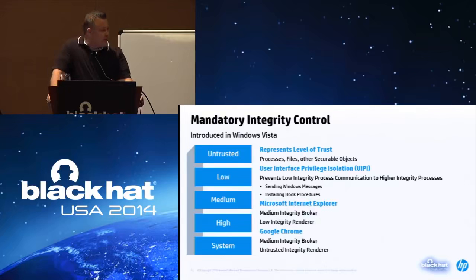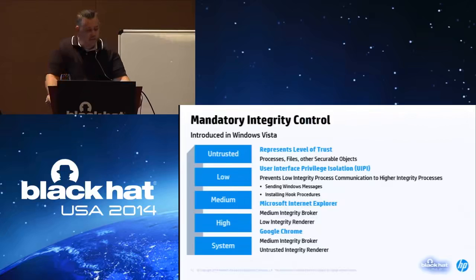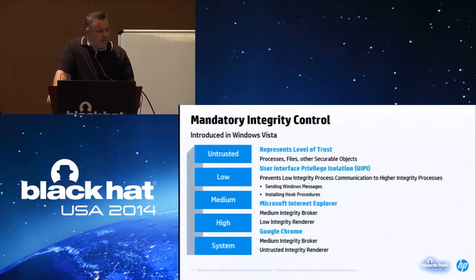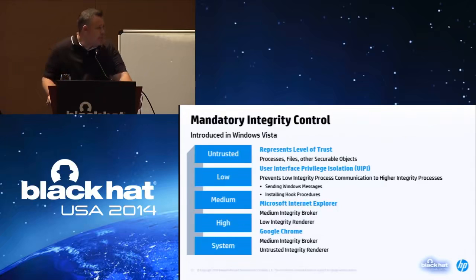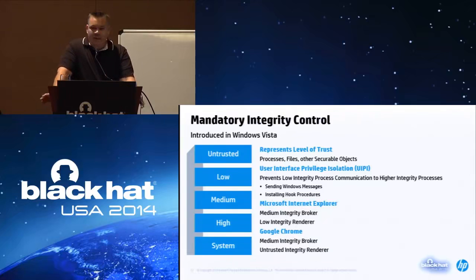One of the most popular ways to implement the sandbox combines all of those things with mandatory integrity controls, introduced in Windows Vista. There are five integrity levels representing the level of trust in a process — lower integrity processes don't have access to all resources a higher integrity process would. In Internet Explorer the renderer process runs at low integrity while the broker code runs at medium integrity. In Google Chrome they use untrusted integrity for their renderer and medium integrity for their broker. Windows Vista also introduced User Interface Privilege Isolation, which prevents lower integrity processes from sending window messages and hook procedures to higher integrity processes, effectively stopping shatter attacks.